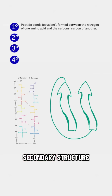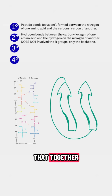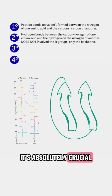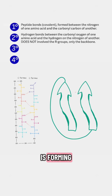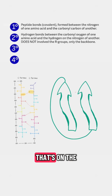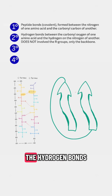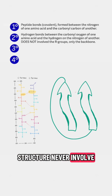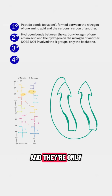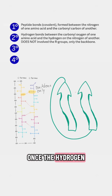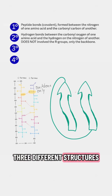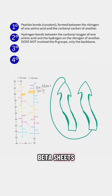Next, we have secondary structure, and hydrogen bonds are what hold that together. It's absolutely crucial that you know the hydrogen bond is forming between the oxygen on that carbonyl group and a hydrogen on the nitrogen of a different amino acid. The hydrogen bonds in secondary structure never involve R-groups — they're only between the backbone of the amino acids. Once the hydrogen bonds form, they're going to make one of three different structures. The first one is called parallel beta sheets.